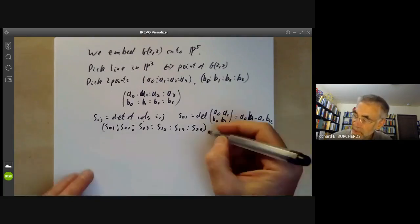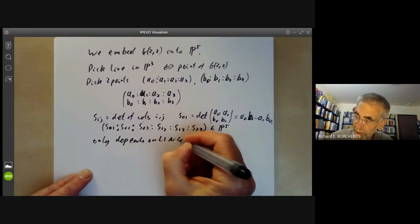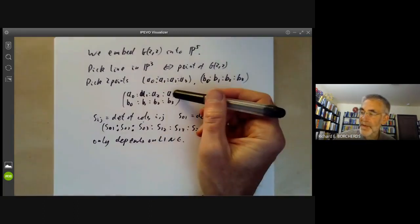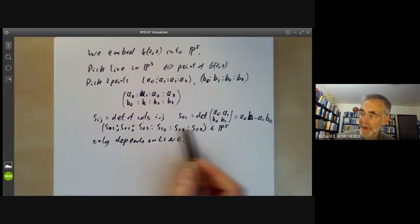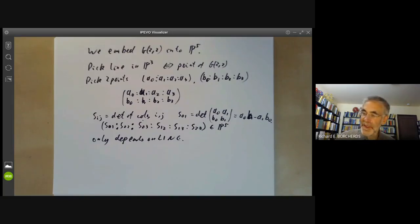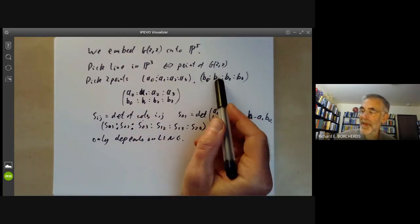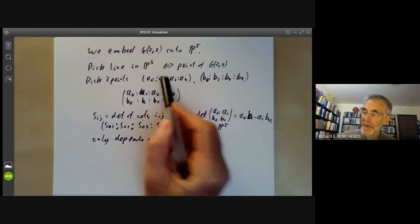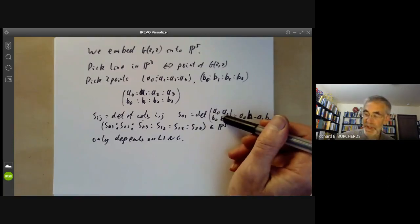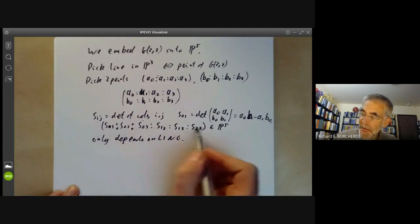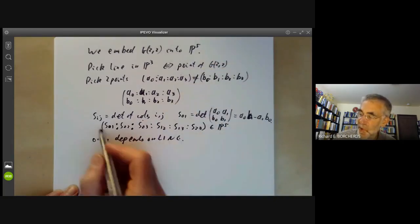Now notice this point of P5 only depends on the line that we chose. So first of all if we multiply all the A's by a constant or all the B's by a constant obviously all these determinants get multiplied by the square of that constant so it doesn't change that point in P5. Secondly we had a lot of choice about which two points were picked on the line so we can pick other points by replacing B by a multiple of A. This corresponds to adding a multiple of the first row to the second row in all these determinants but that doesn't change the value of the determinants. So changing which two points of the line we pick as long as these are distinct points isn't going to change this point of P5.